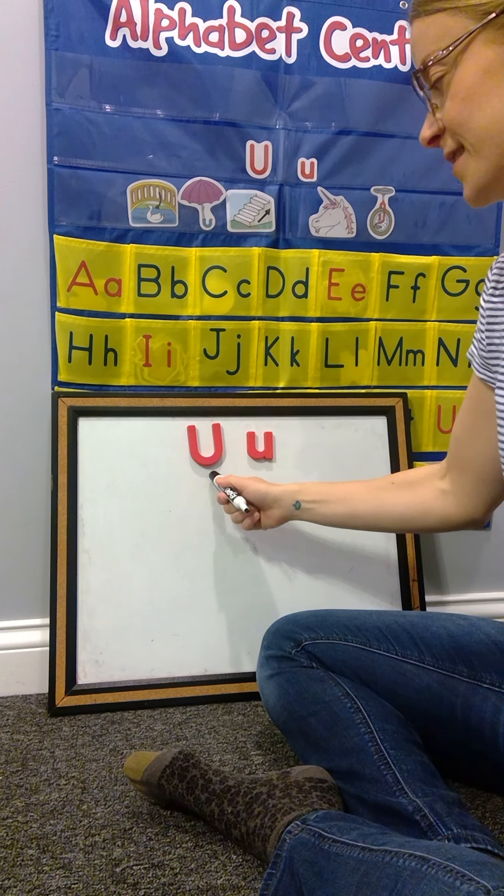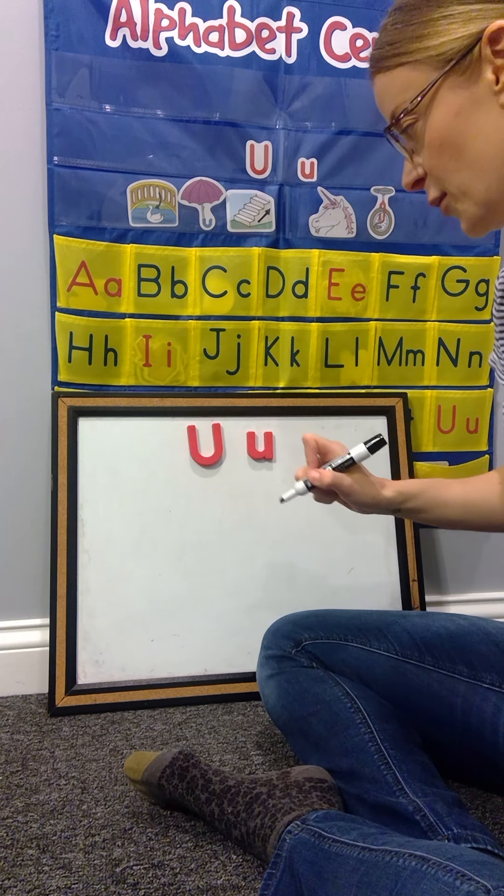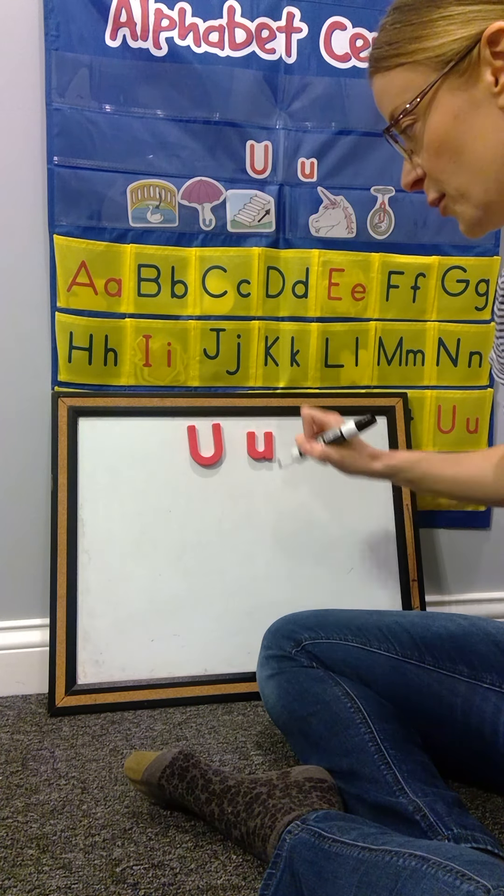So when I look at this uppercase letter U, I see that there's sort of two lines that go down, and then it almost looks like a swing, kind of at the bottom where you would sit to swing on a swing set.